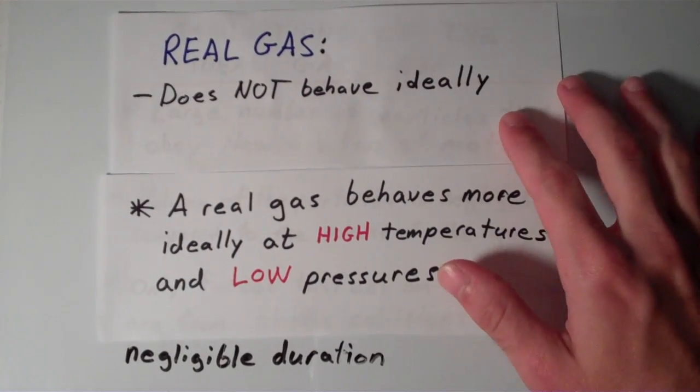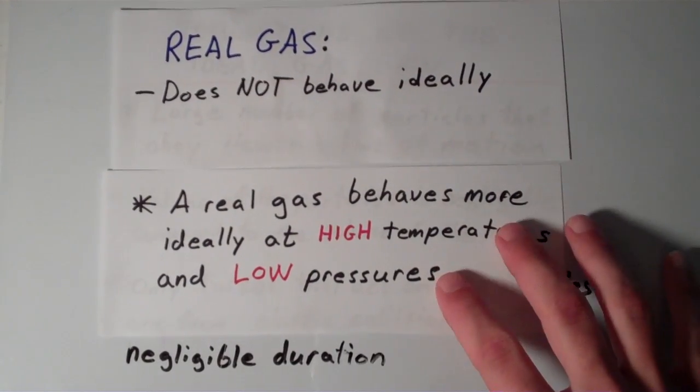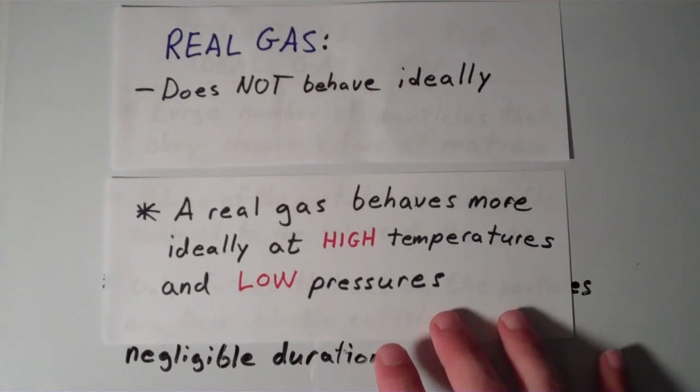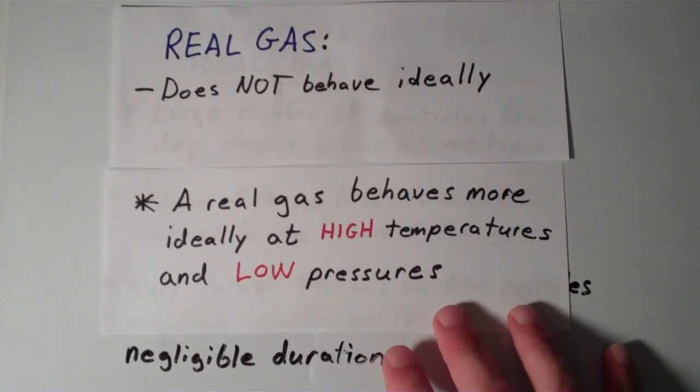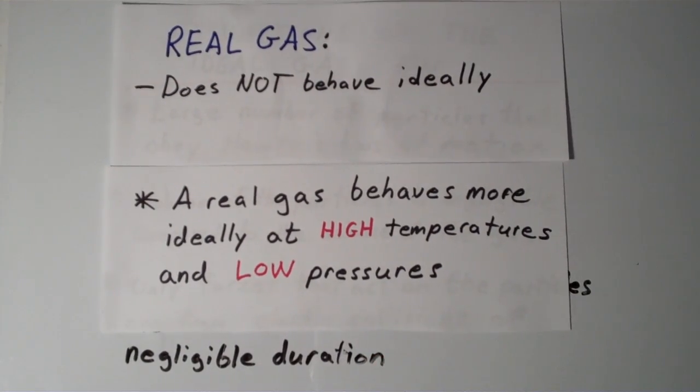If you're trying to study a gas and you want to apply the ideal gas law equation, PV equals NRT, your best bet is to carry out the experiment at high temperatures and at low pressures. These are the conditions in which a real gas starts to behave more ideally.